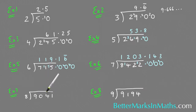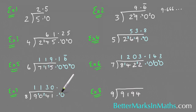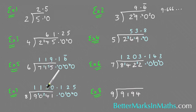Example seven: how many eights in 9041? How many eights in nine? There's one with one left over. How many eights in ten? There's one with two left over. How many eights in 24? There's three with none left over. How many eights in one? There are none, so carry that one. How many eights in ten? There's one with two left over. Add another zero with remainder two. How many eights in 20? There's two — two eights are 16, so four left over. How many eights in 40? There's five, and that goes exactly. So how many eights in 9041? The answer is 1130.125, and that's the exact answer — no more digits after the five.